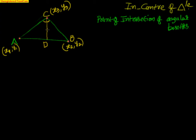I want to divide this angle into two equal parts as well. The point of intersection of these two angular bisectors is nothing but the incenter. Let's call it G. This is what we have to work upon.